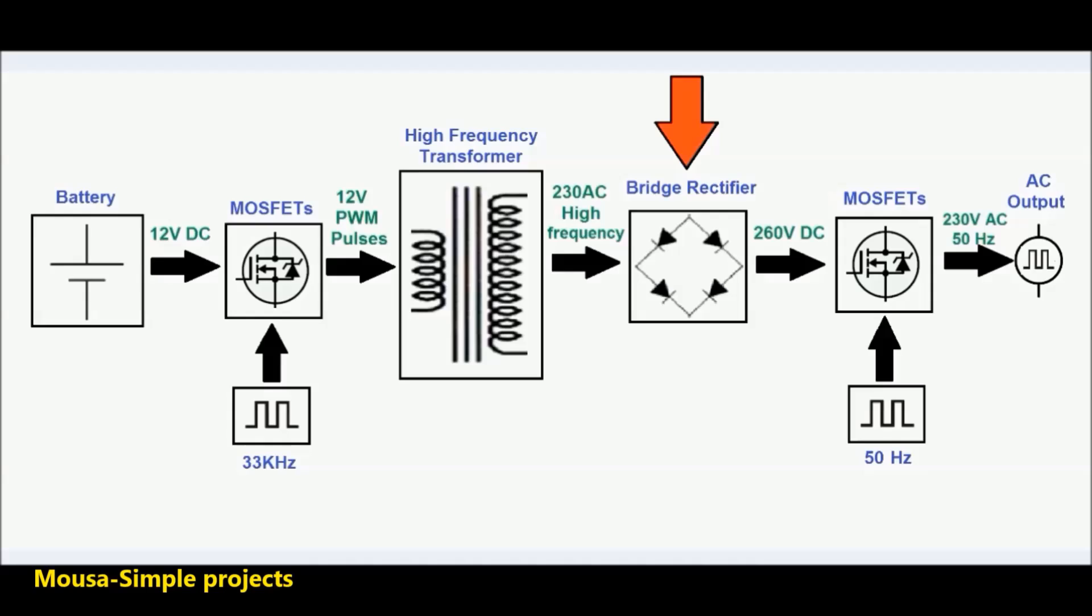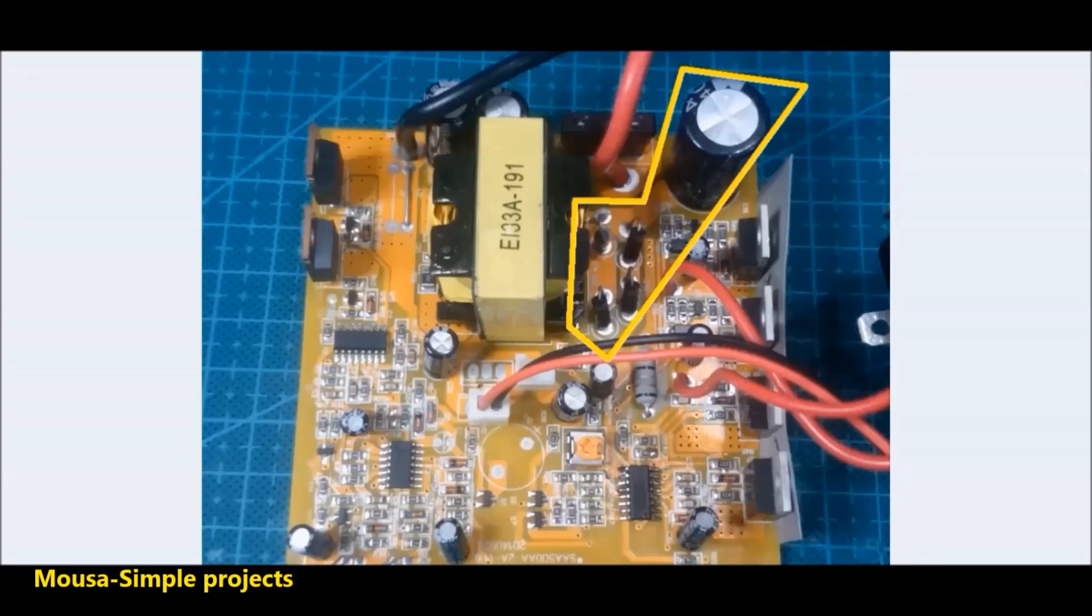The output voltage of this transformer connected to bridge rectifier and a big capacitor. The voltage across this capacitor will be about 260 volt DC.